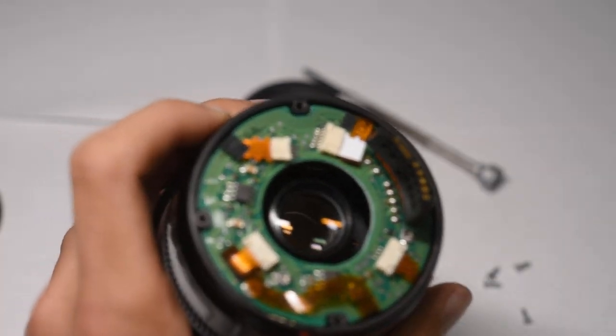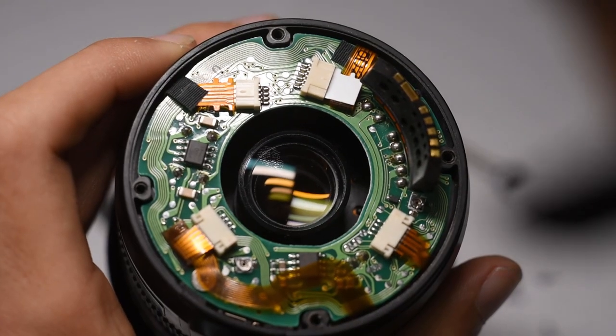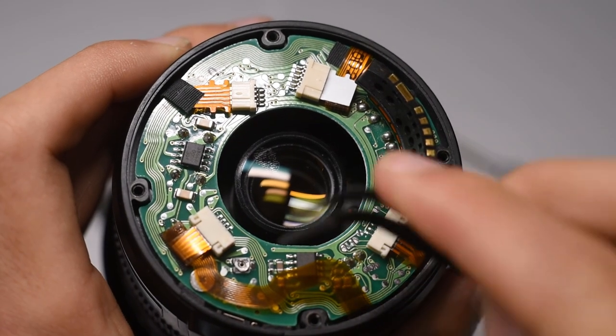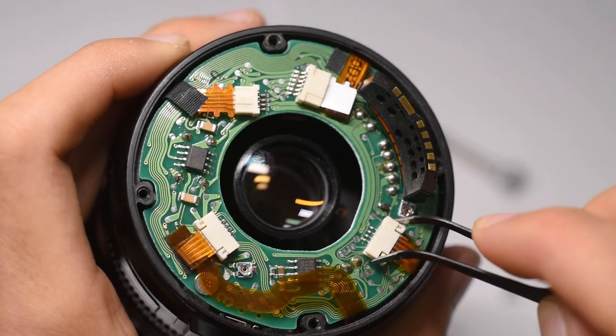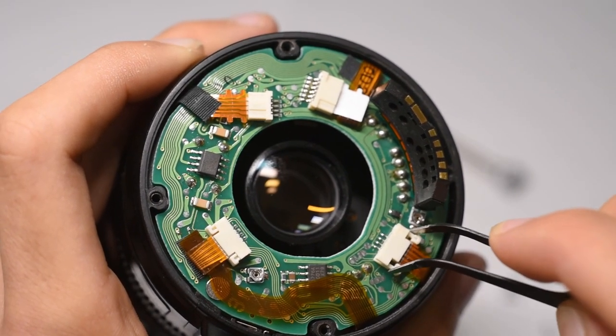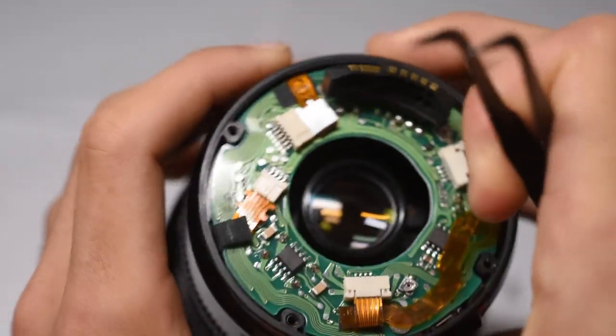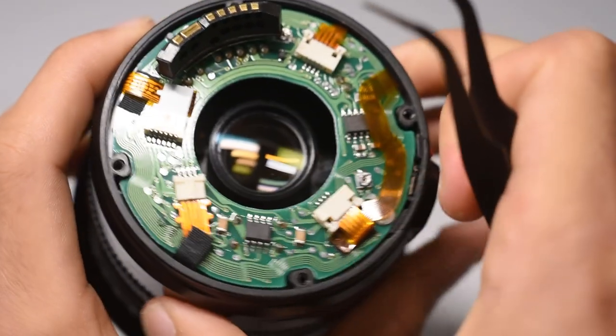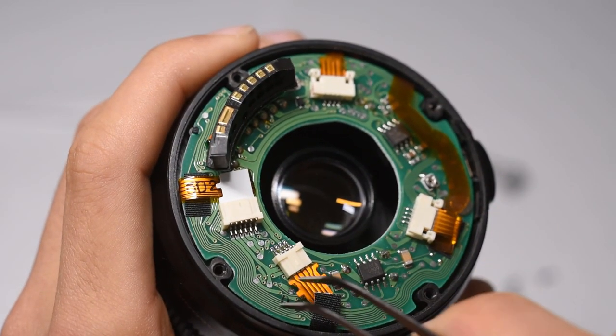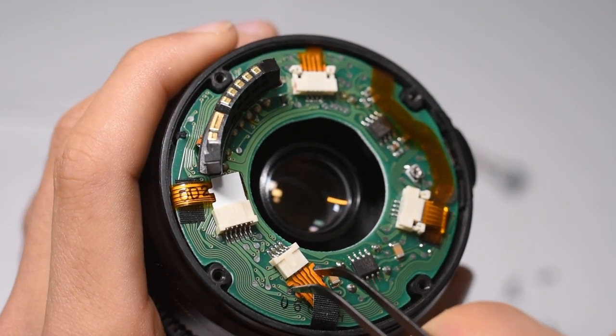As you can see, there's two that need to be unlocked by pulling out here. And then these two, you can just pull out by directly touching the wire. Just be careful.